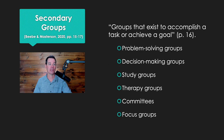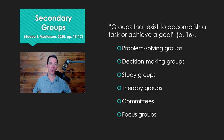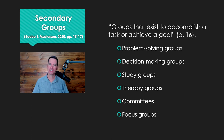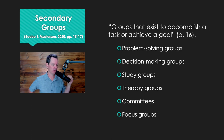Now let's turn to secondary groups. Secondary groups are groups that exist to accomplish a task or achieve a goal. My group of friends — we weren't trying to accomplish a task. We were just hanging out. We were there for the relationship, not for some job we were trying to accomplish.